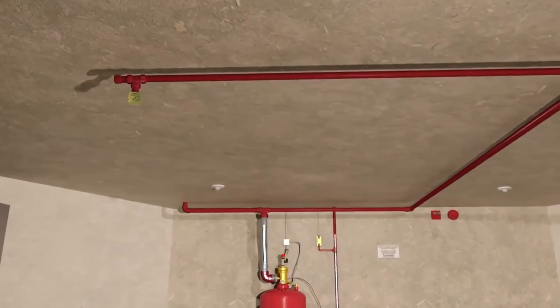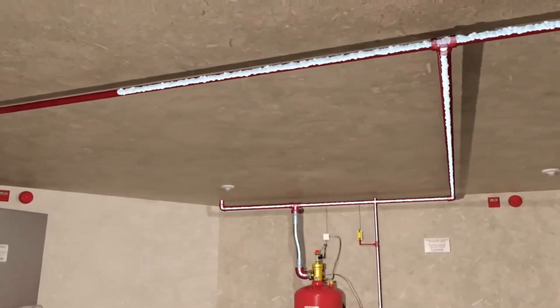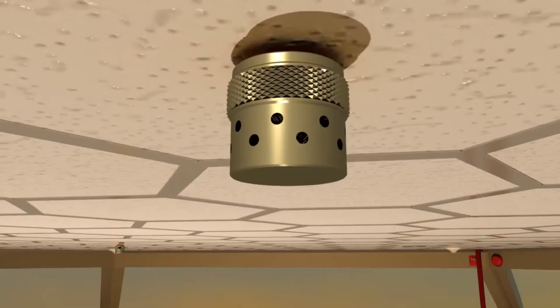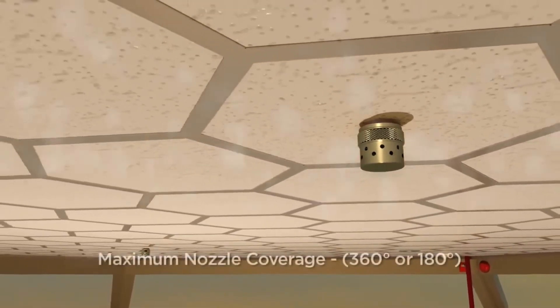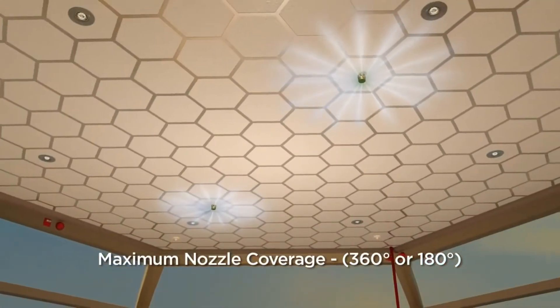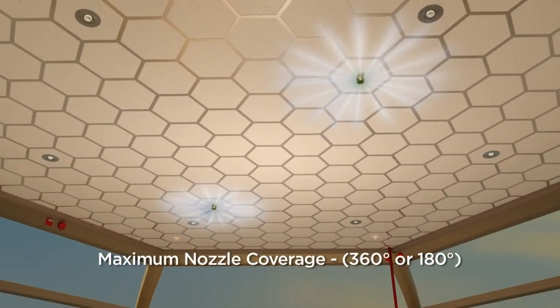Once actuated, the Sapphire system distributes agent throughout the piping network to the protected areas. The fire suppression fluid discharges through fixed nozzles uniformly distributed in a 360 or 180 degree pattern, flooding the hazard area.